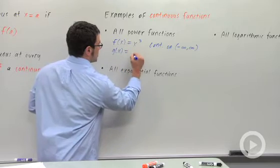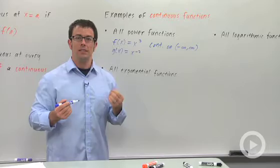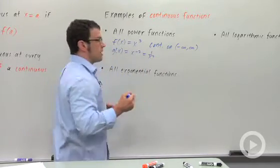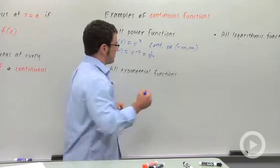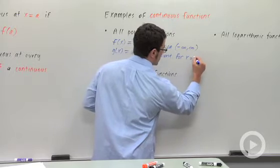g(x) = x^(-2). That's also a power function. It's continuous everywhere it's defined. This is the same as 1 over x². This will be continuous for all x except 0, continuous for x ≠ 0.